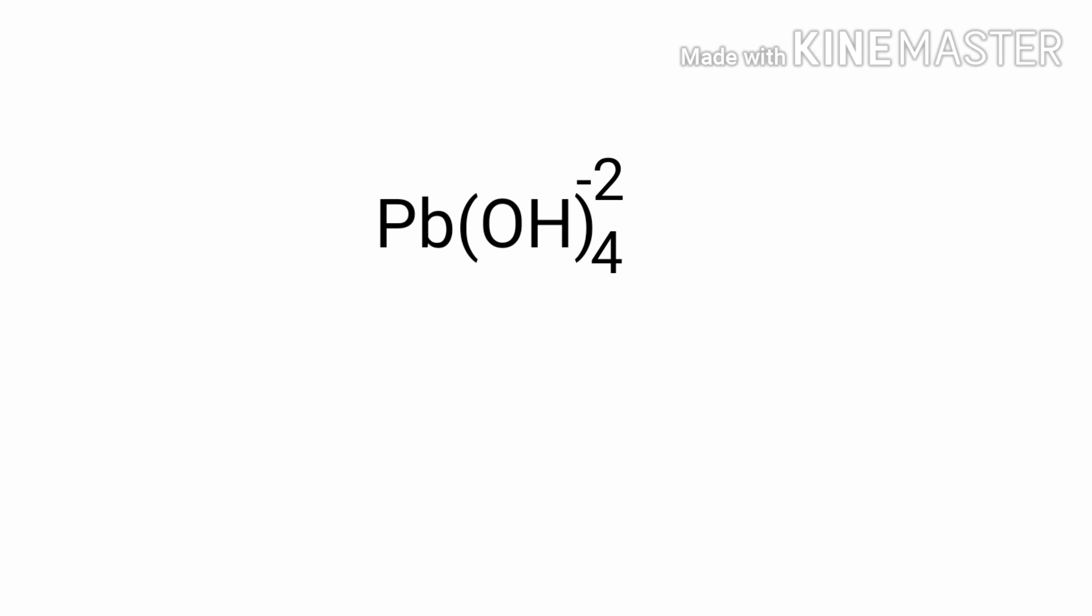By the rules of assigning oxidation numbers, the oxidation number of hydrogen is plus 1 in non-metals. The oxidation number of oxygen is minus 2 in compounds.